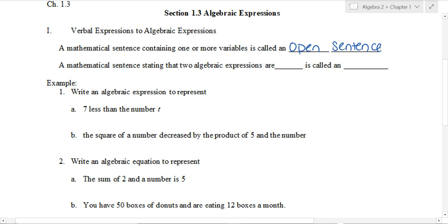An example of this would be 3x plus 4. It's an expression or an open sentence. And a mathematical sentence stating that two algebraic expressions are equal is called an equation. So good rule of thumb if there's an equal sign in the middle, it is an equation. If we have 3x plus 4 equals 17, we have an equation.